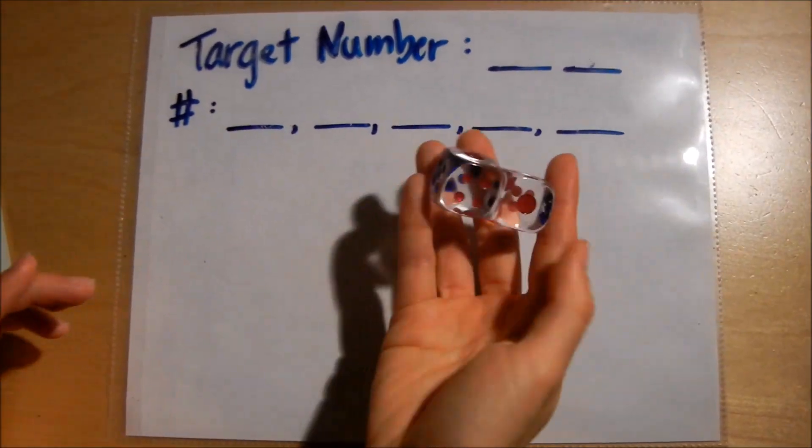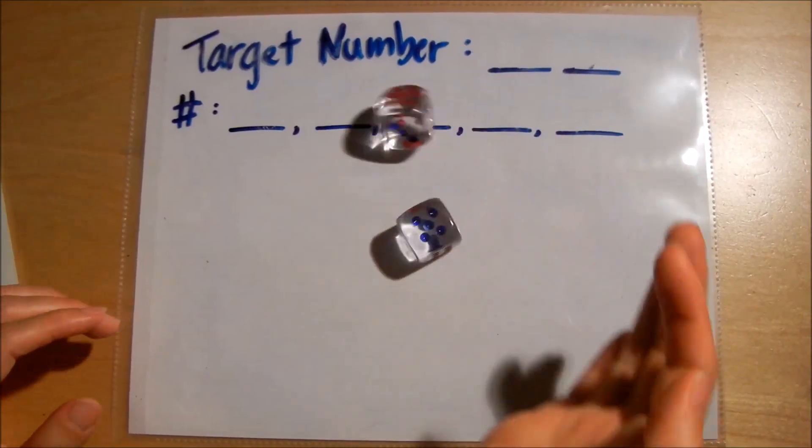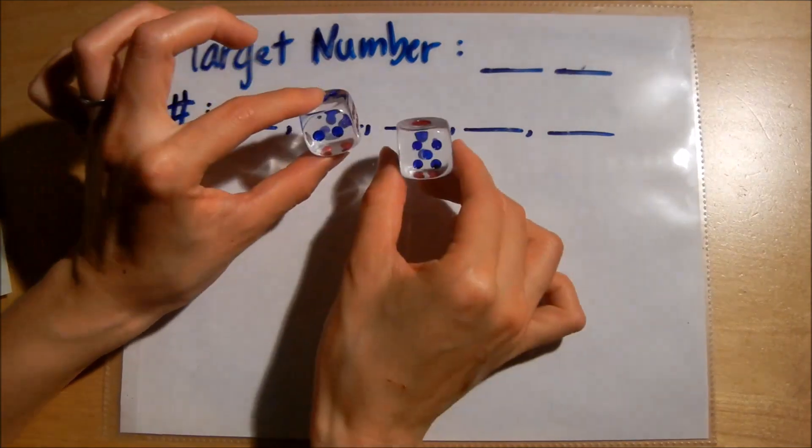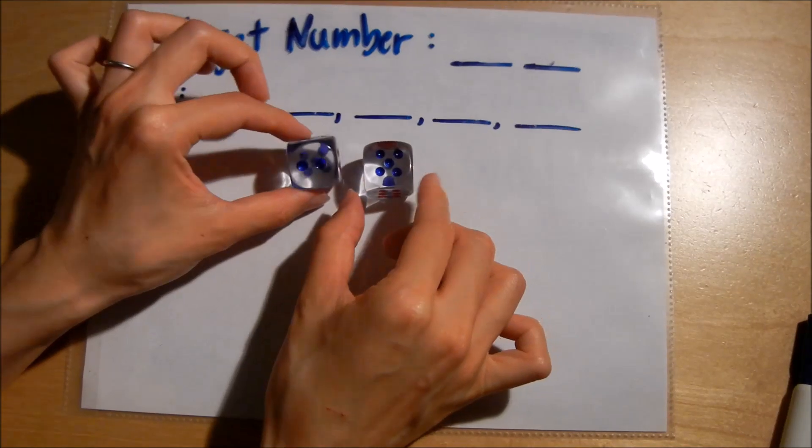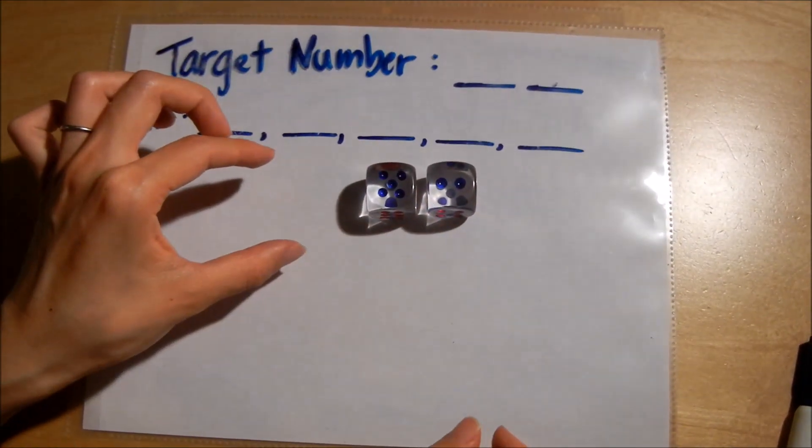To get my target number, I'm going to roll these two dice. It's kind of hard to see but this is a two and this is a five. You can make your target number either 25 or 52. It's up to you.